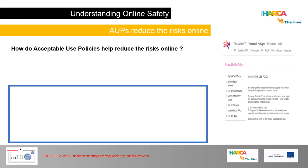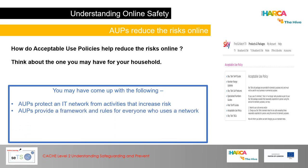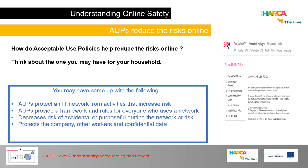Think about how acceptable use policies help reduce the risks online. AUPs protect an IT network from activities that increase risk. They provide a framework and rules for everyone who uses a network, decreasing the risk of accidental or purposeful activity that puts the network at risk. They protect the company, other workers and confidential data, set restrictions on what may be accessed online, and restrict software downloading.